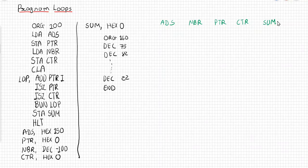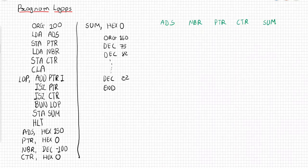Hello students. In the previous tutorial we discussed the second pass of the assembler and how instructions are converted into binary code. Here we will discuss the programming aspect — specifically program loops.